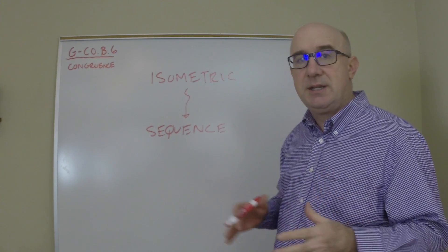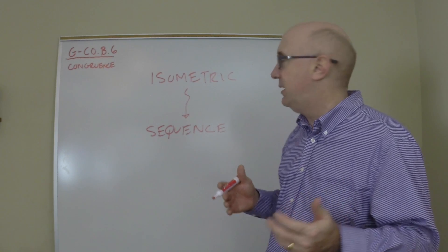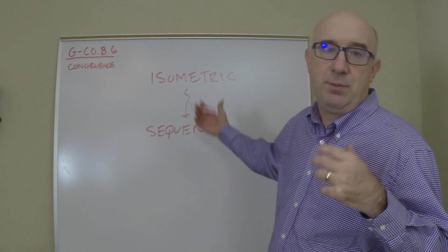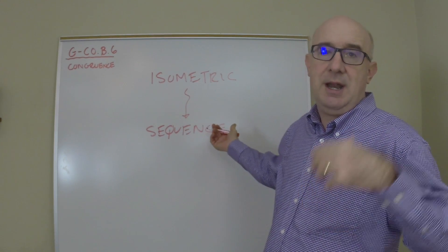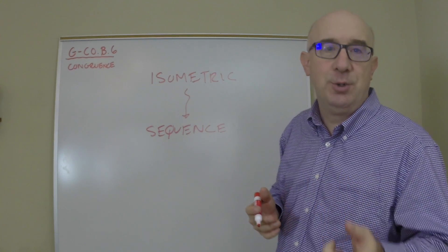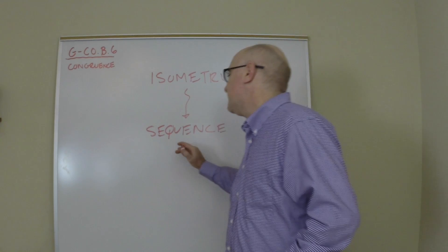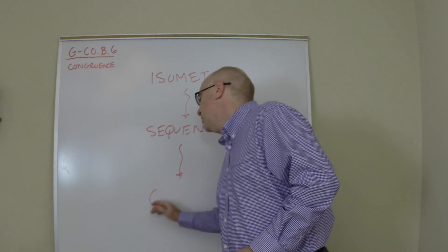As long as you did a sequence of the isometric ones, you would then guarantee that the final image and the original preimage would still be congruent or isometric with each other. And this brings us to that idea of congruence then.